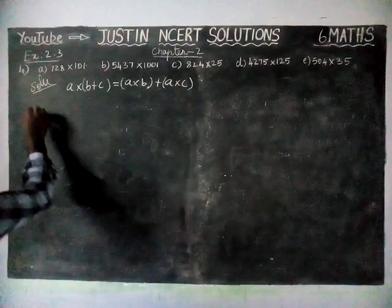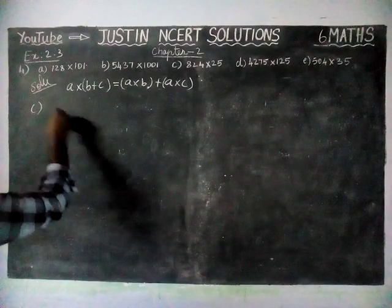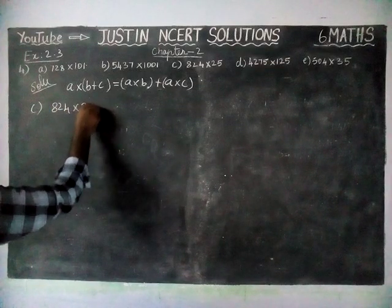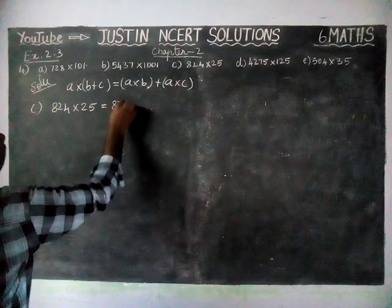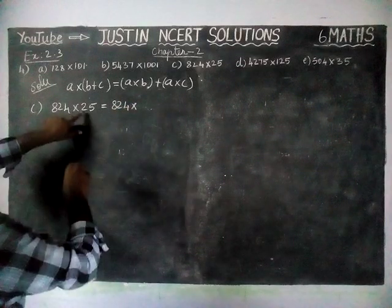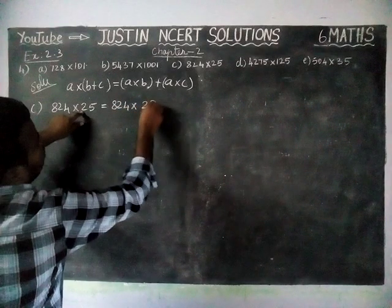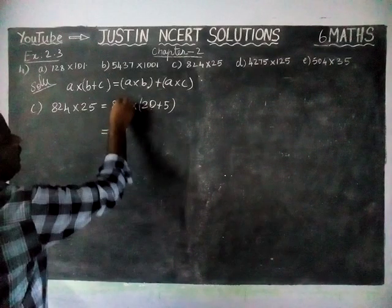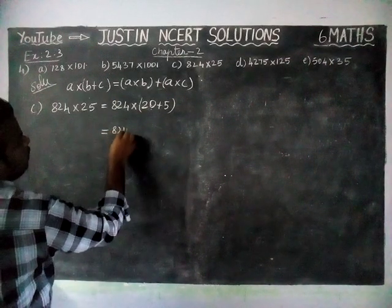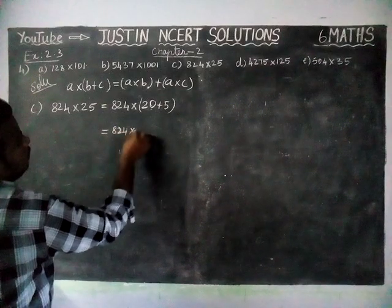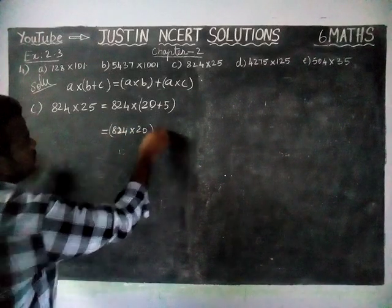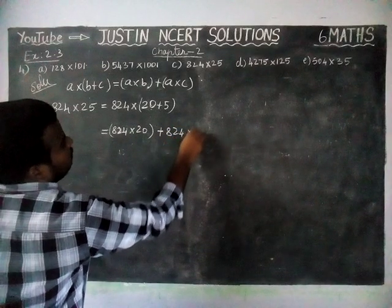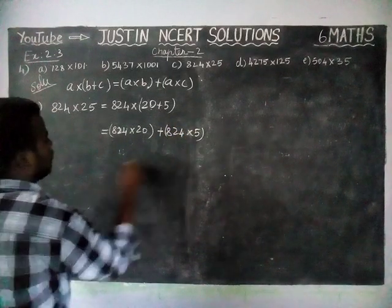Now we are going to see option C. Option C is 824 into 25. We are going to separate this 25 as 20 plus 5, which is equal to A into B plus A into C — so 824 into 20 plus 824 into 5.